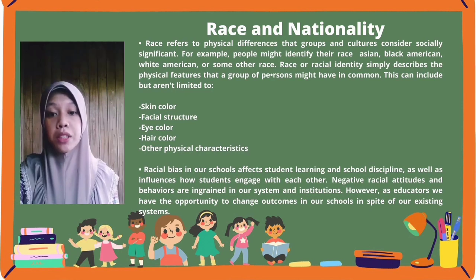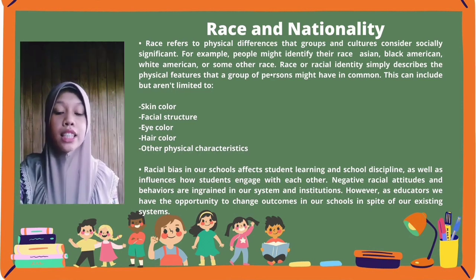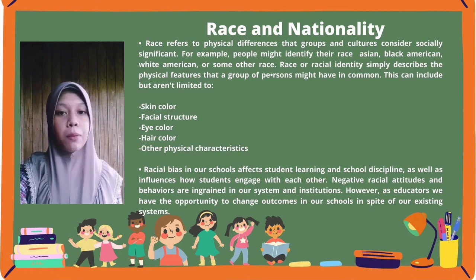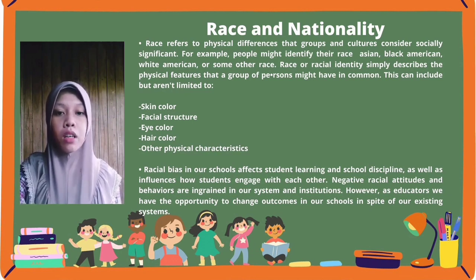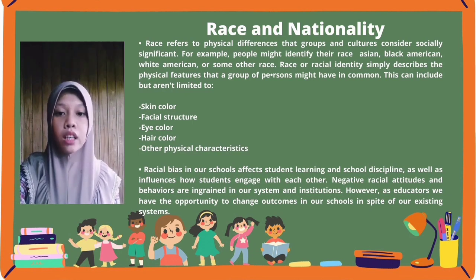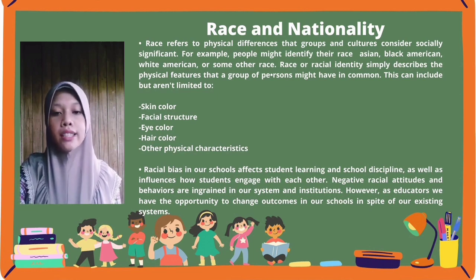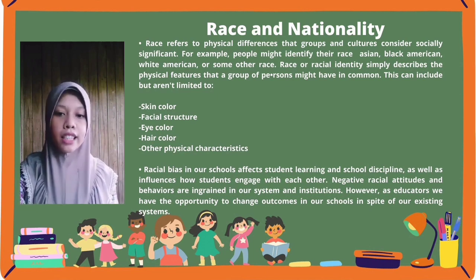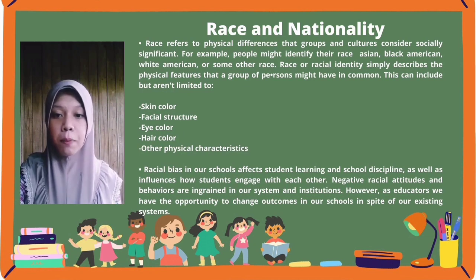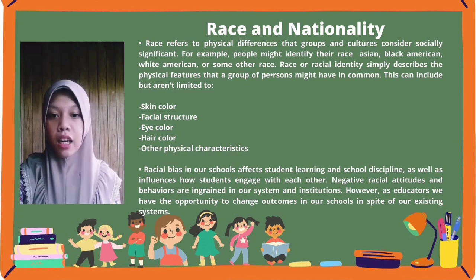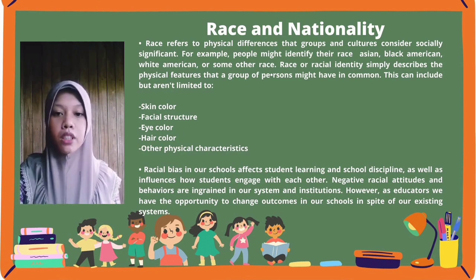Race refers to physical differences that groups and cultures consider socially significant. For example, people might identify their race as Asian, Black American, White American, or some other race. Racial identification simply describes the physical features that a group of persons might have in common.